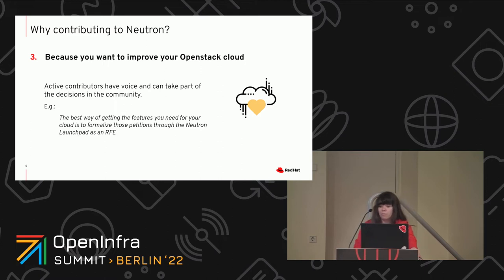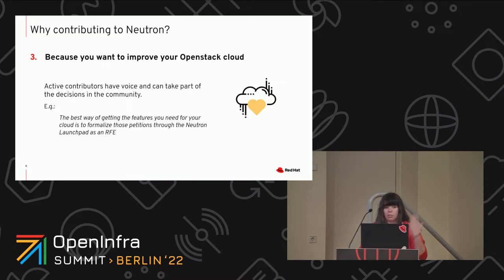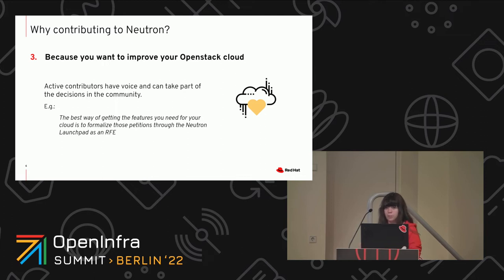The third reason is for people who work in a company and want to improve their OpenStack cloud. It's key to know that the people who actually decide the route that Neutron is taking are the people who are taking part in the code and review contributions. The enhancement requests that are proposed are approved and questioned by the people actually contributing to Neutron. So it's not just about being a company that needs something — it's about getting involved with the project itself, because that's the only way it can survive long term.